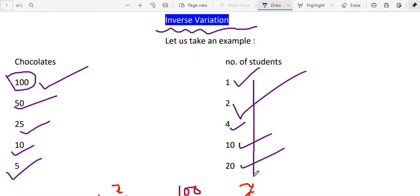Now here you have seen number of students gradually increasing: 1, 2, 4, 10, 20. And this side, it is decreasing: 100, 50, 25, 10, 5. So this type of situation is called inverse variation.